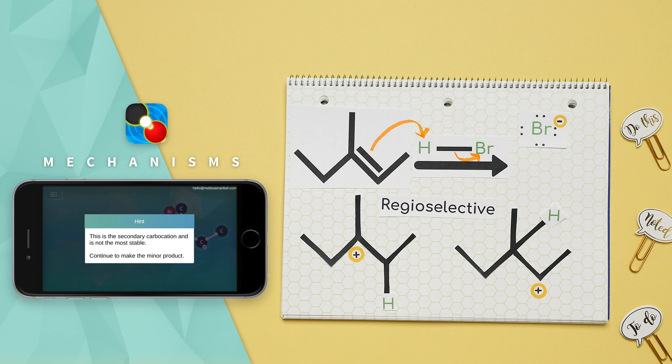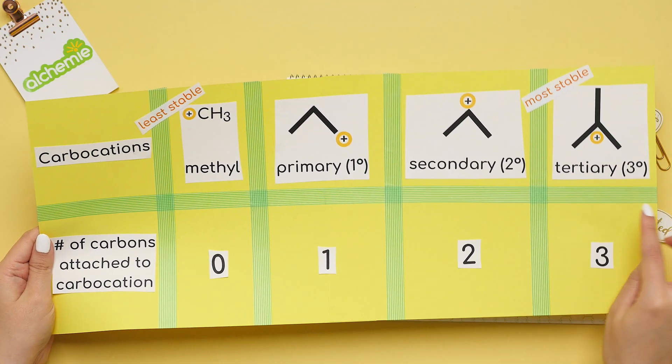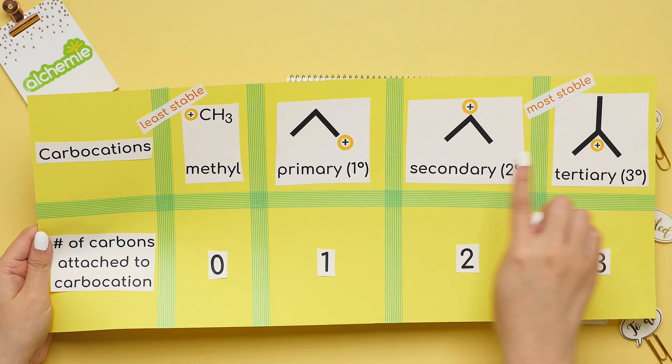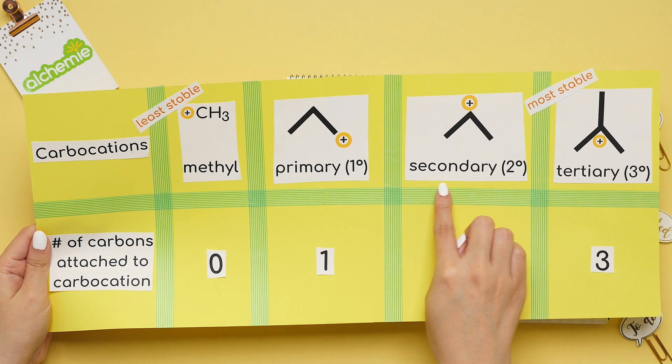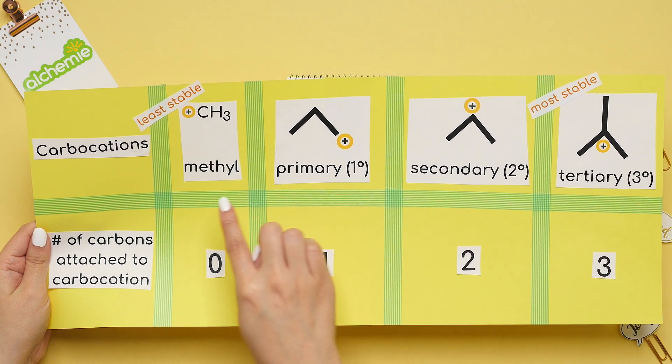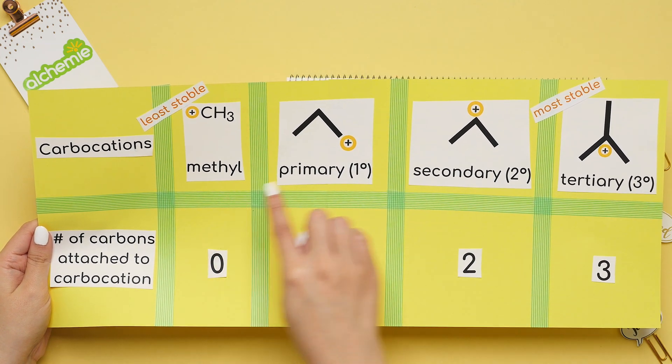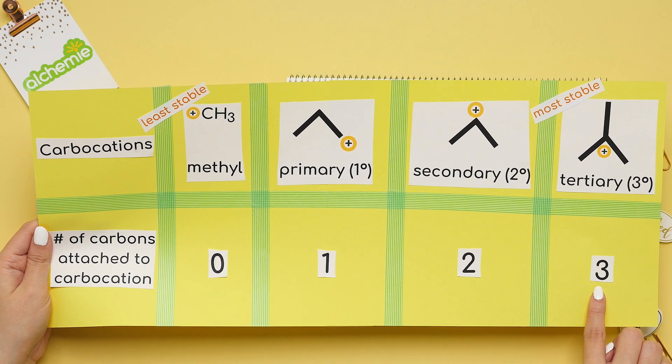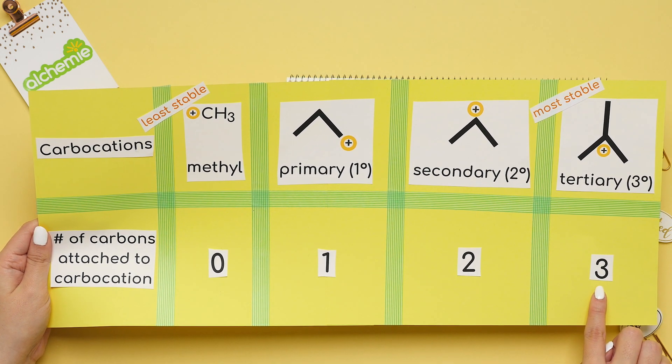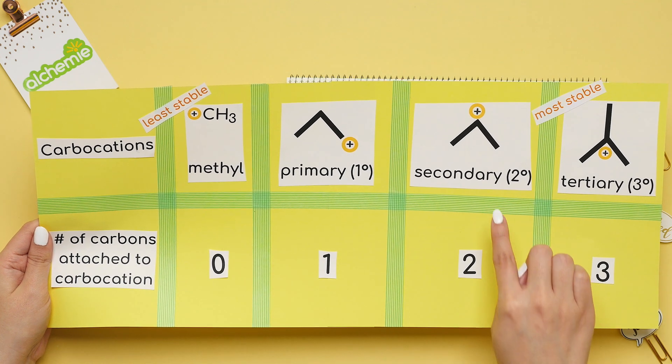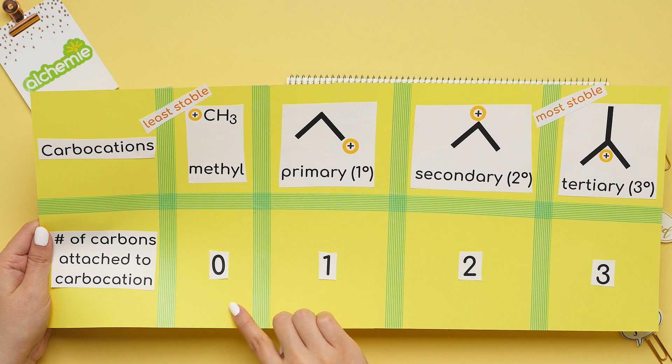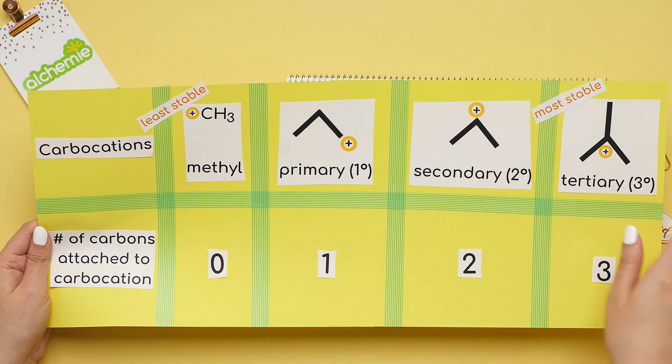This carbocation is not the most stable. Remember that a tertiary carbocation is the most stable and most favorable. Then a secondary carbocation follows and primary and last is a methyl carbocation. We know a carbocation is tertiary if there are three carbons attached to the carbocation. Two carbons attached to the carbocation is secondary, one carbon is primary and no carbons attached to the carbocation would be the methyl.